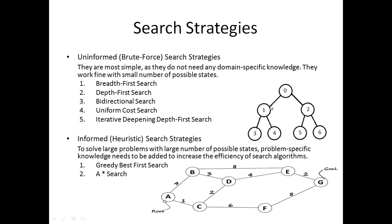In blind search we don't have any cost information associated with the paths. Informed search strategies are called informed because we already have some previous information like path cost and other heuristics that we will discuss later on. The two most important informed search strategies are greedy best first search and A* search.